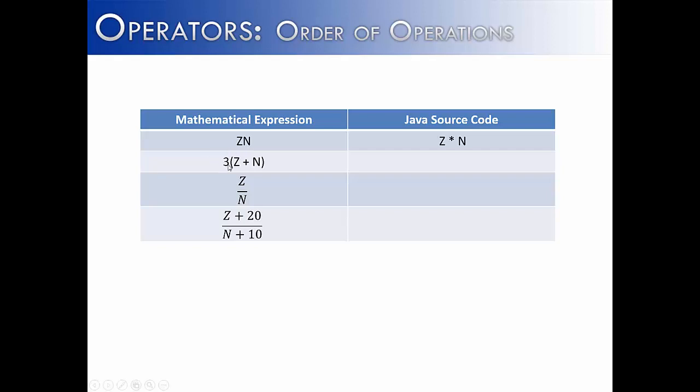The same thing is true for the next example. You would have to say 3 times Z plus N. Or Z over N would look like Z forward slash N. And then our last example is going to show us order of operations because it would look like Z plus 20 divided by N plus 10.